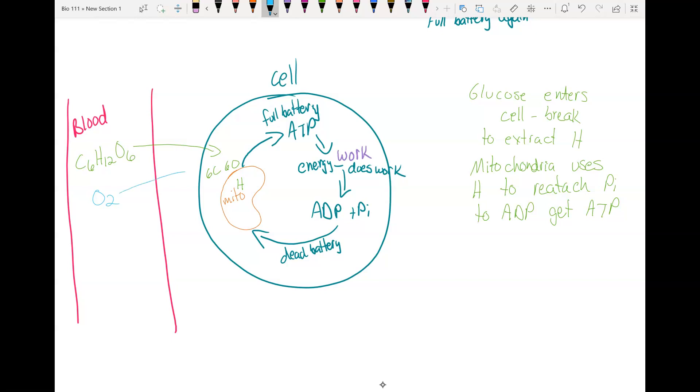You need oxygen for this process of making ATP. The oxygen comes in and combines with that carbon and oxygen left over. Notice you have six carbons and six oxygens, a one-to-one ratio. If you bring some more oxygen in and add to that, you get carbon dioxide, which is a waste product that you can put in your blood and you go to your lungs and exhale.